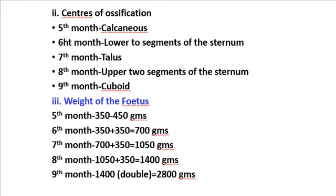Second is the center of ossification — from centers of ossification we can determine the gestational age. At the fifth month, calcaneus of the foot appears; at six months, lower segment of the sternum center appears; at seventh month, talus; at eighth month, upper two segments of the sternum appear; at ninth month, cuboid ossification center appears.